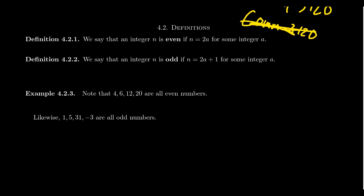Ambiguity exists when a term can be reasonably interpreted in more than one way. For example, take the word 'bank' — it could describe a financial institution, a place where you deposit or withdraw money. But 'bank' could also refer to the side of a river. So if I just say what does 'bank' mean by itself, you don't know because it could mean one of two things.